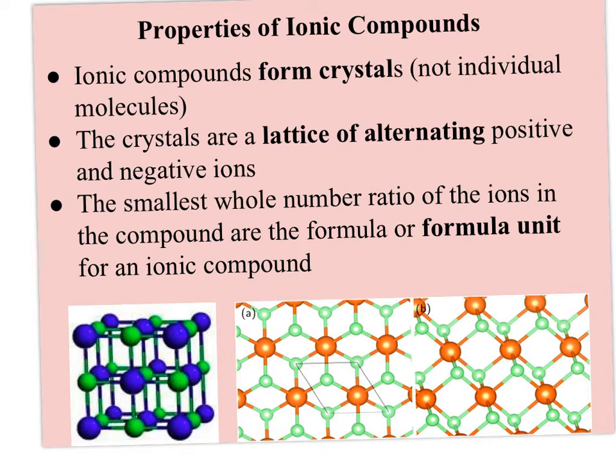So once the ions form, you have this positive and negative ion. An ionic compound forms, and it forms crystals. Most of you are familiar with the idea of a crystal, like a crystal of salt — it might be a big chunk like rock salt. So instead of forming individual molecules like water (H2O), ionic compounds form these limitless crystals. They can go on as long as you want them to.